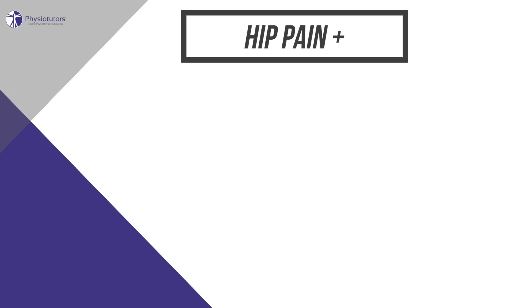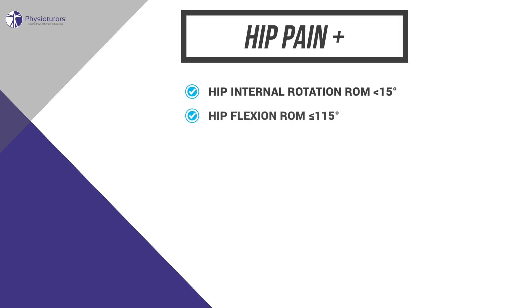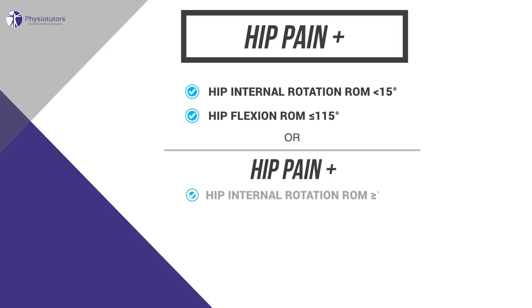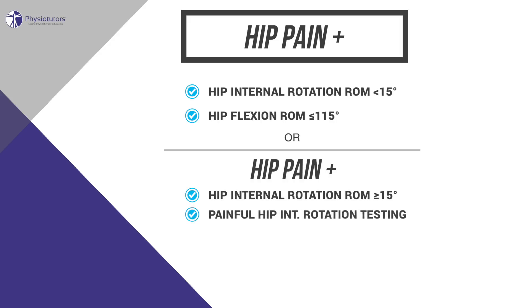The clinical classification criteria contain the presence of hip pain plus the following items: 1) hip internal rotation range of motion of less than 15 degrees, 2) hip flexion range of motion of 115 degrees or less, or hip pain plus 1) hip internal rotation range of motion of 15 degrees or more, 2) pain on hip internal rotation testing, 3) morning stiffness of less than 60 minutes, which is an important factor to distinguish osteoarthritis from rheumatoid arthritis, in which case stiffness is usually lasting longer than that.